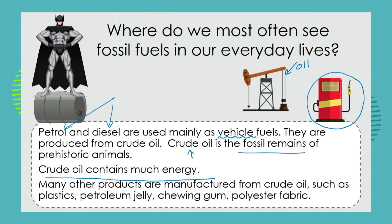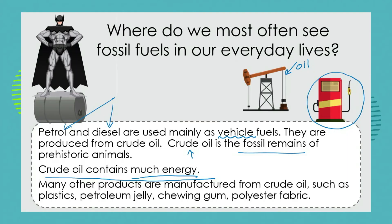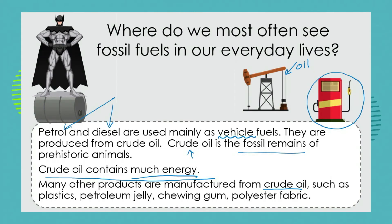Crude oil contains much energy, which is why for hundreds of years we've used it as our major source of energy for powering vehicles and other machines. Other products can also be manufactured from crude oil through distillation, such as plastic, petroleum jelly that you might put on your lips, chewing gum, and certain human-made products like polyester fabrics.